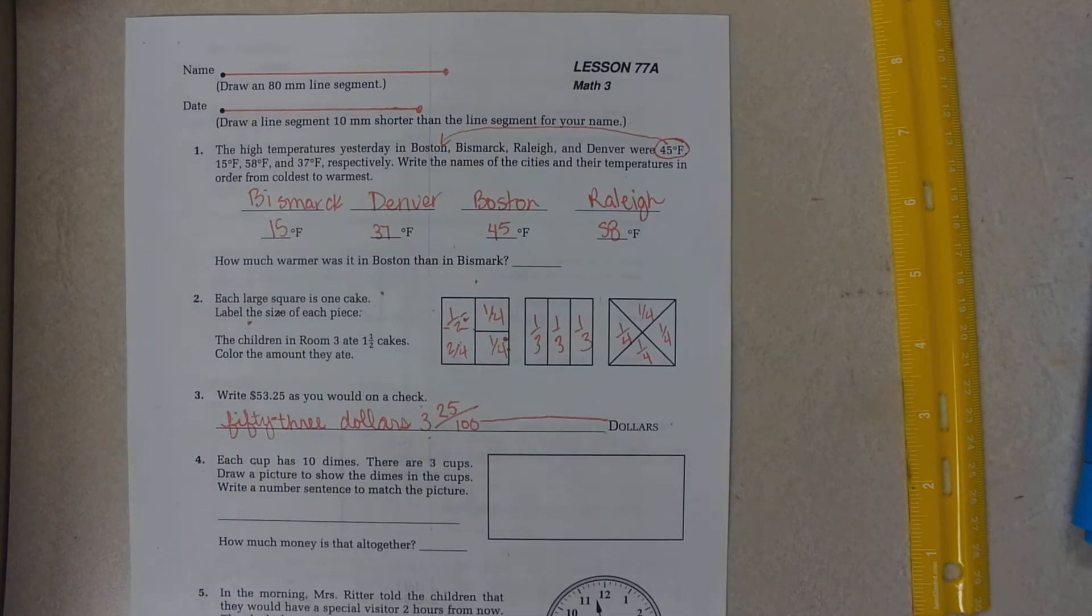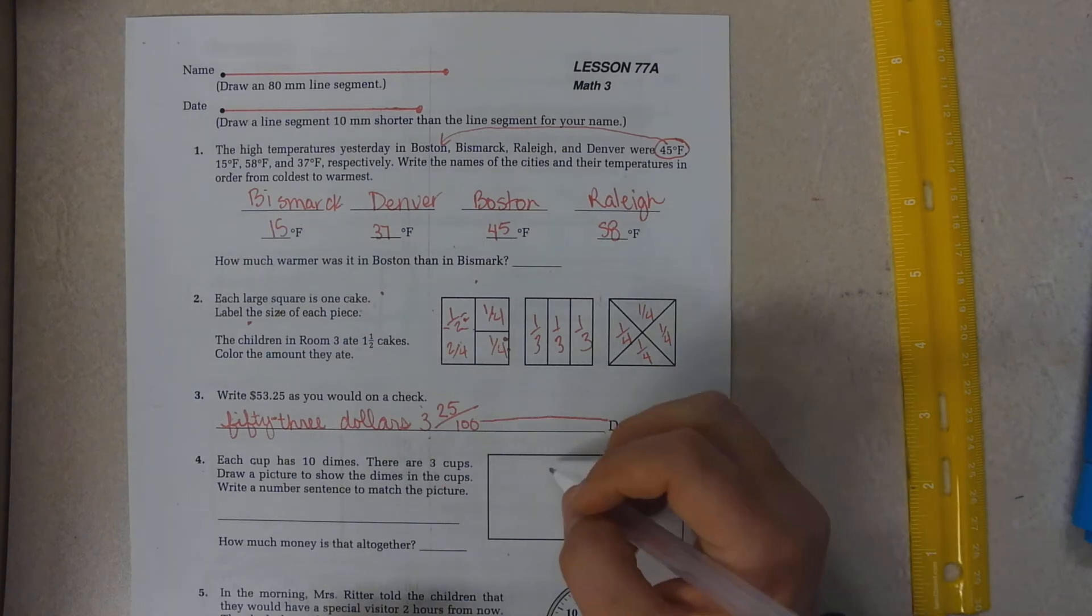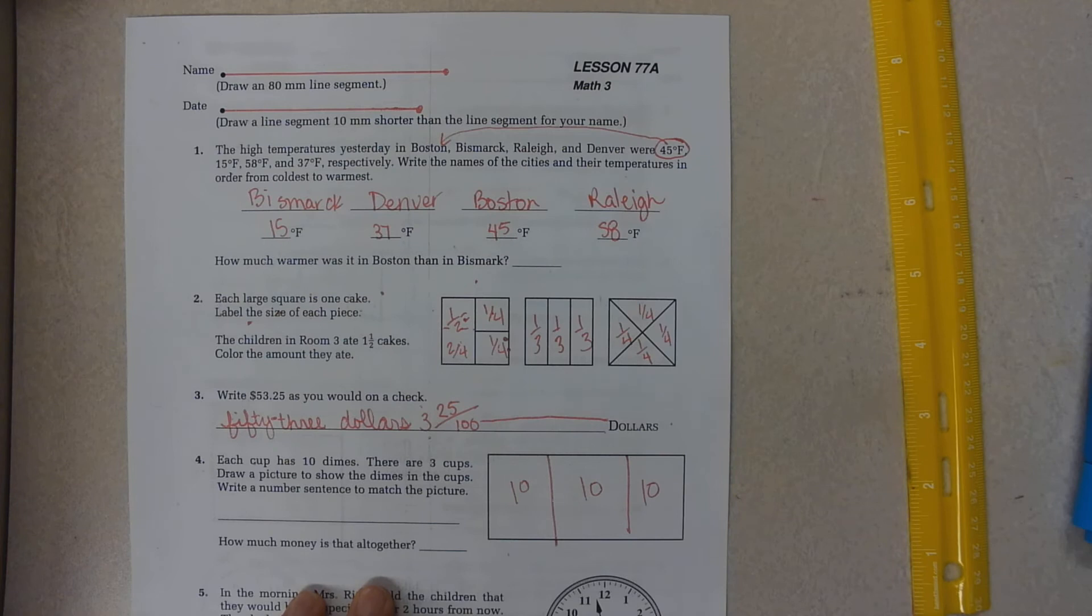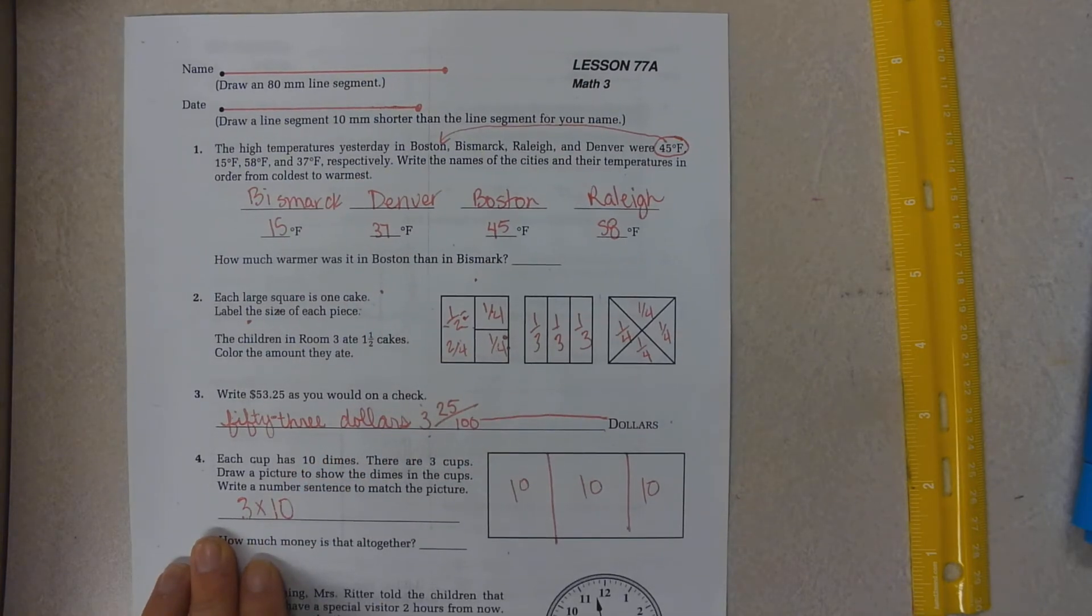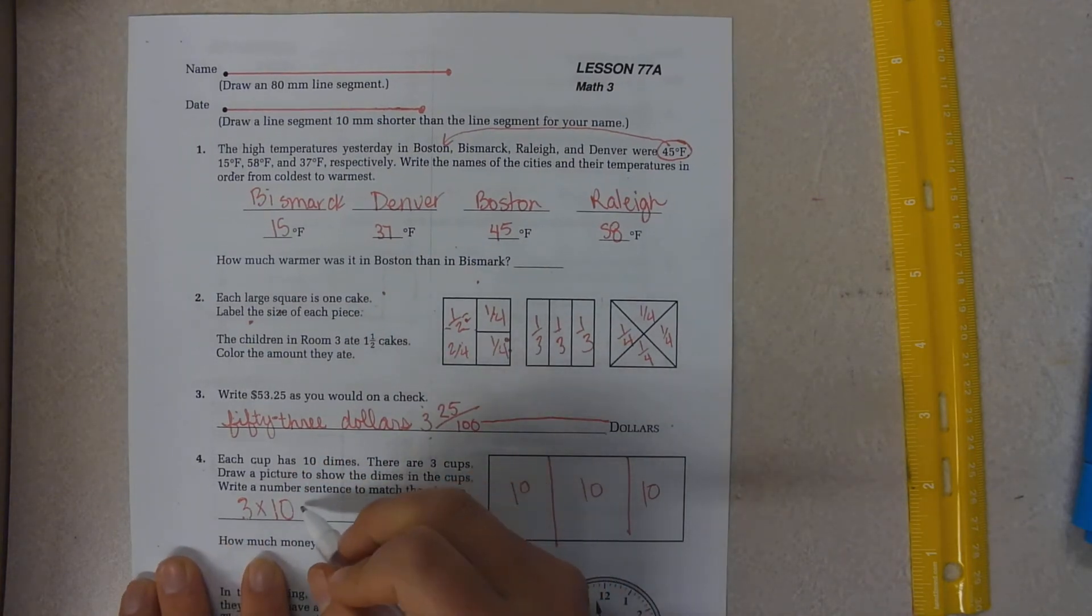Each cup has ten dimes. There are three cups. Three cups. Ten dimes. Write a number sentence to match the picture. Three times ten. That is thirty.